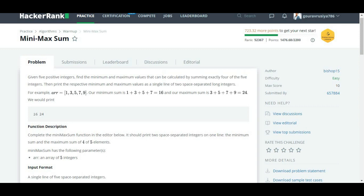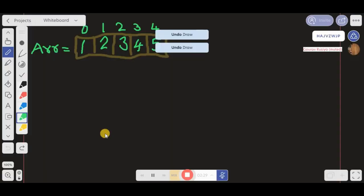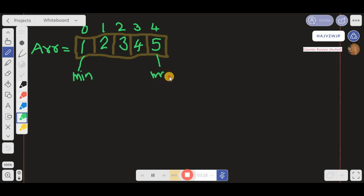Print the respective minimum and maximum values as a single line of two space-separated long integers. Taking this example for the explanation part, let's jump to the whiteboard. Here if we see the elements in this array are kind of sorted, and the first element is the minimum, the last element is maximum.